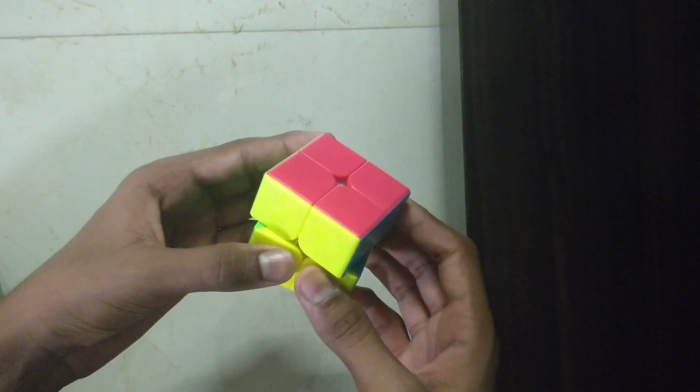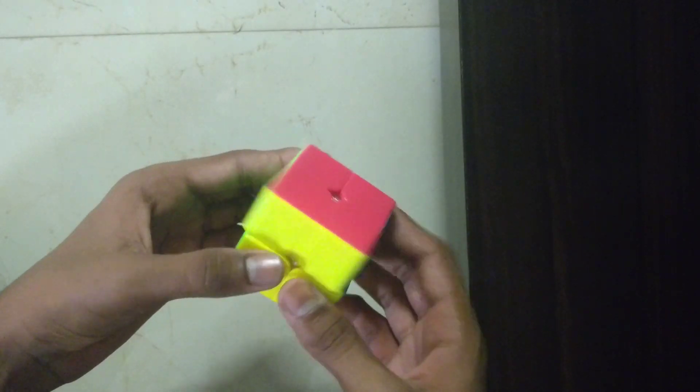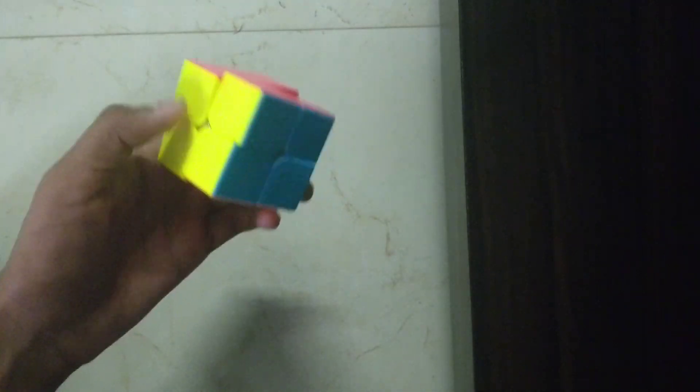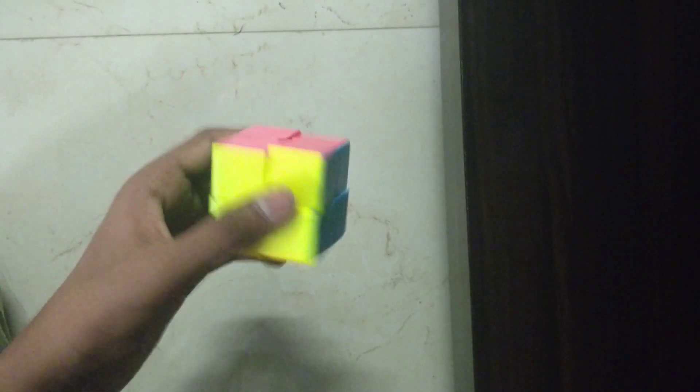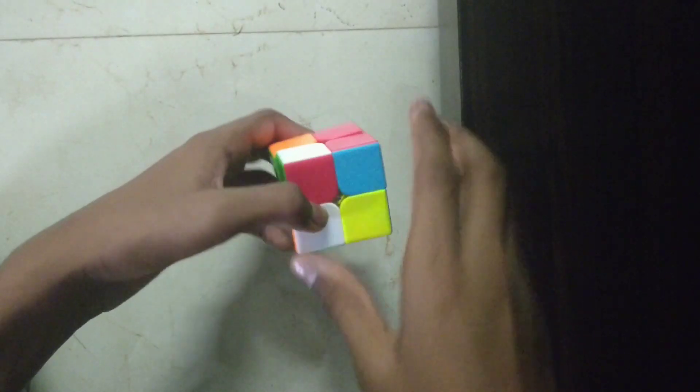Hello everyone. Today we are going to see how to solve a 2x2 Rubik's cube. So let us start by scrambling it. So this is fully scrambled.